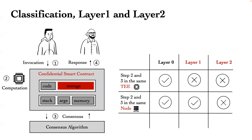Before diving into specific evaluations, we provide a brief tour of how a typical confidential smart contract operates. Four steps are included: loading inputs into the contract engine, computation inside the TEE, conducting consensus, and returning outputs. We classify current solutions into layer-1 and layer-2 by investigating whether steps 2 and 3 are executed within the same TEE. For layer-1 solutions, all operations are within the same TEE, whereas for layer-2 solutions, steps 2 and 3 are separate but still within the same node.